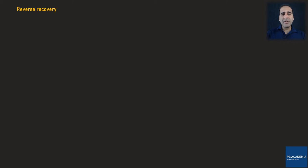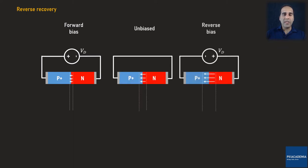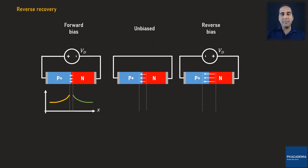From the previous lectures, we know that a diode can be forward biased, unbiased, and reverse biased. When the diode is forwardly biased, the minority charge carrier concentration across the length of the diode looks like this. Close to the edges of the depletion region, we have extra minority charge carriers, and by moving away from the depletion region, they reduce until they are equal to the equilibrium concentration.